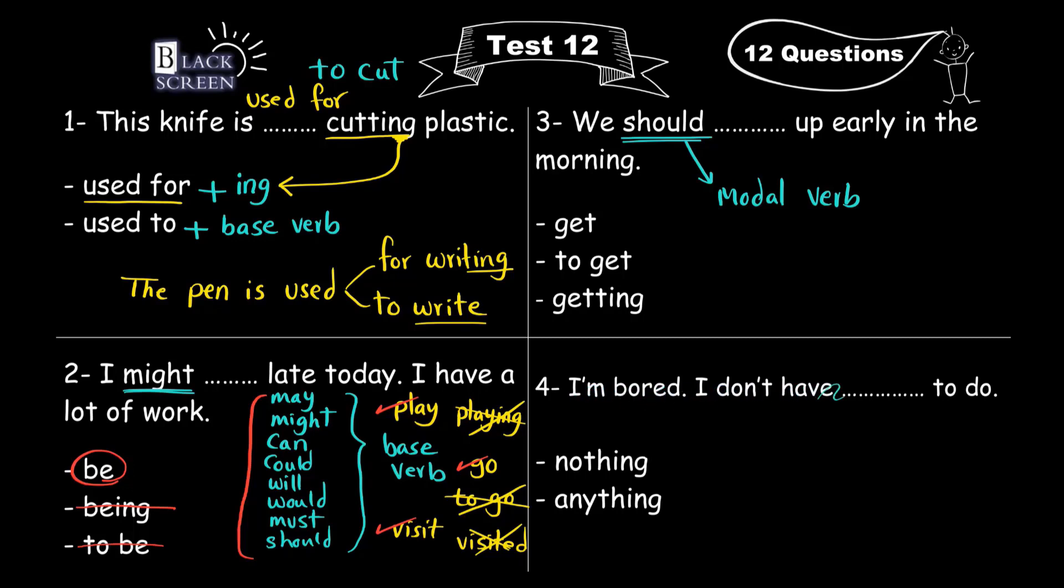I'm bored. I don't have, blank, to do. Nothing, anything. We use nothing in positive sentences, but we use anything in negative sentences, with not in it. Here we have don't, means do not, so the sentence is negative, so we use anything here. I'm bored. I don't have anything to do.